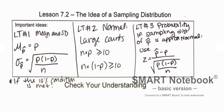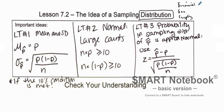We are going to be talking about sampling distributions. When we talk about distributions, we've covered several types: binomial distribution, geometric distribution, and now we are going to have a sampling distribution. In the previous chapters, binomial and geometric were both discrete — discrete values that could be integers or decimals but are discrete. And now we're going to talk about a sampling distribution.